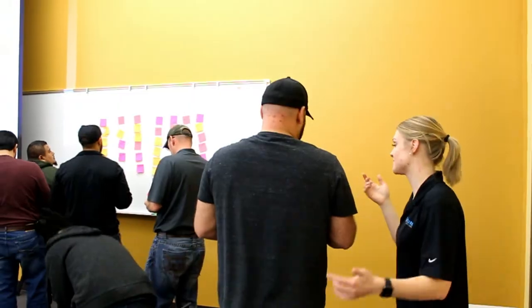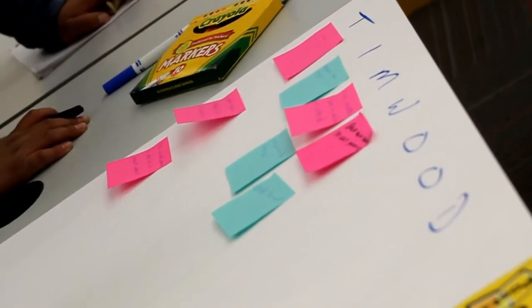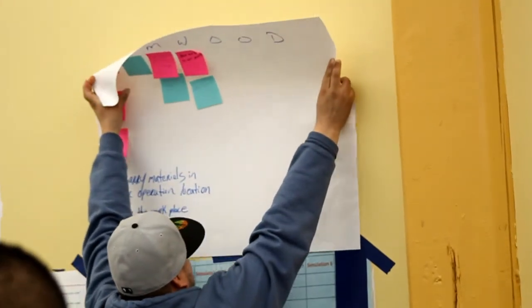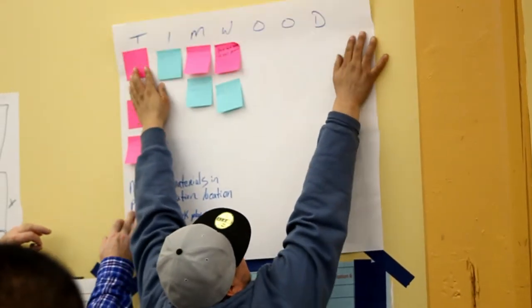Seven wastes are a great tool. Our acronym is TIMWOOD. Those are key components when you're trying to make the biggest changes to make your process the best it can be.